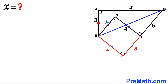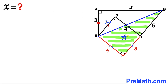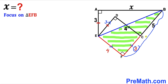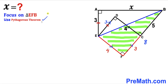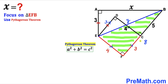In the next step, I have connected points B and E, giving us right triangle EFB. Focusing on right triangle EFB: side length FB is 3 plus 5, which equals 8 units, and side length EF is 4 units. We will now calculate the hypotenuse EB using the Pythagorean theorem: a² + b² = c². Labeling the hypotenuse as y, with the two legs being 8 and 4, we get 4² + 8² = y².